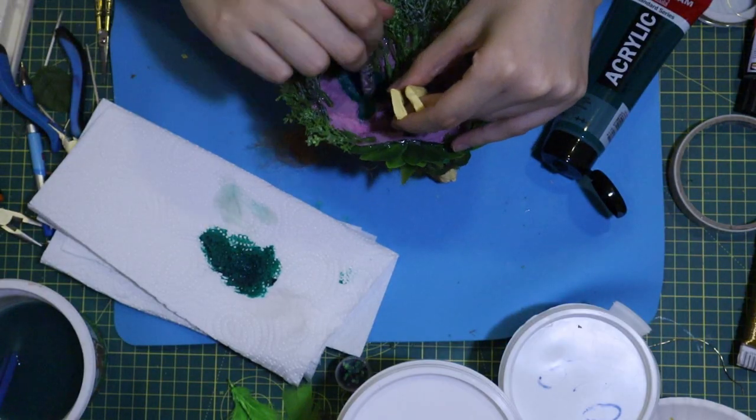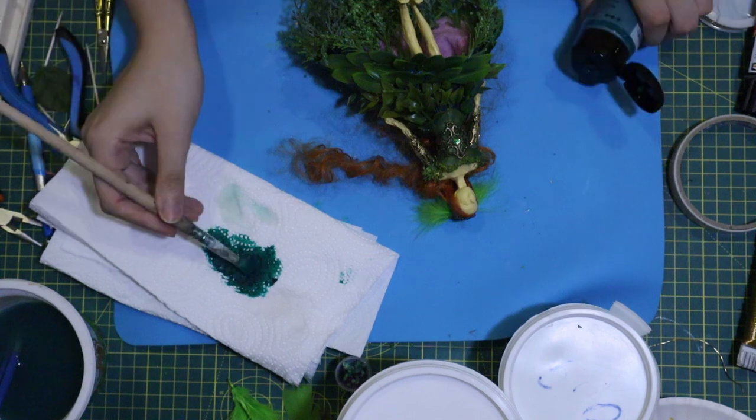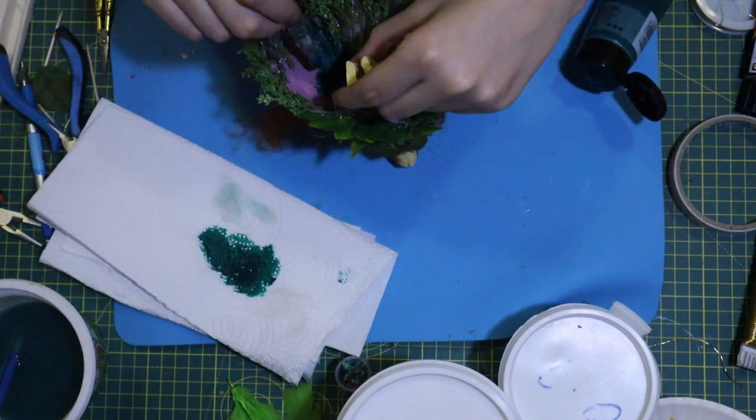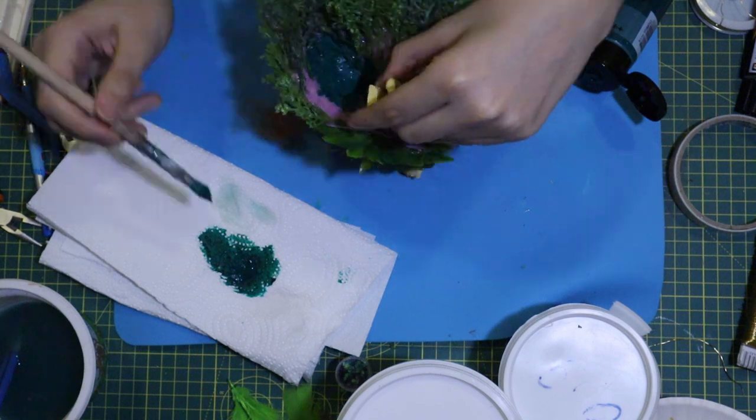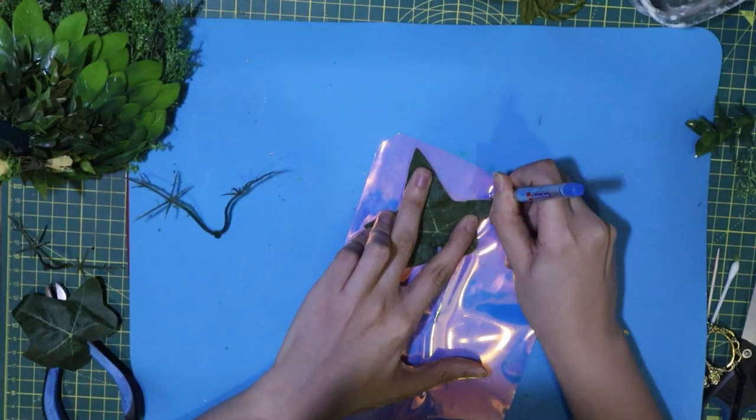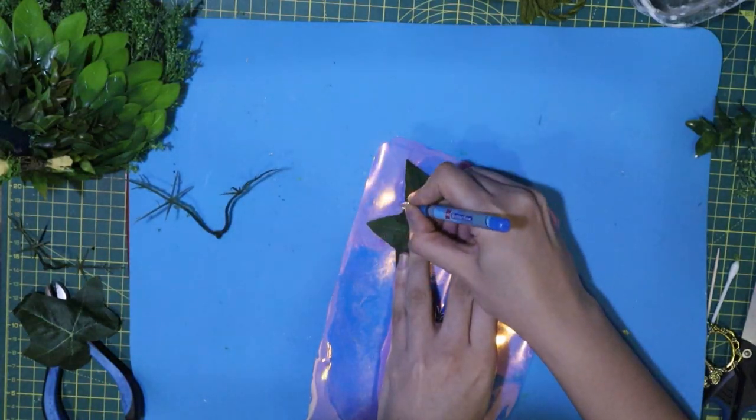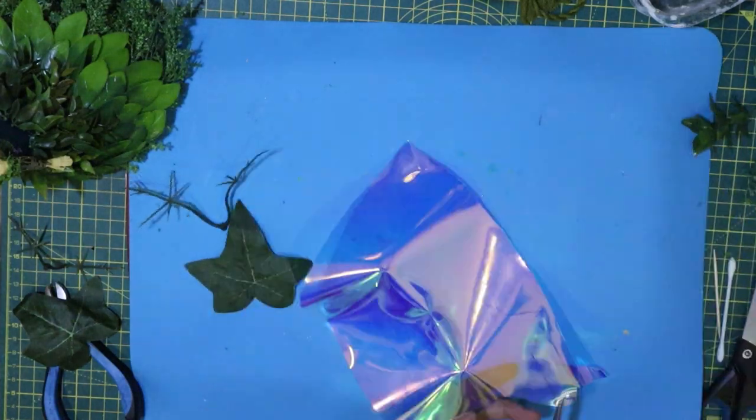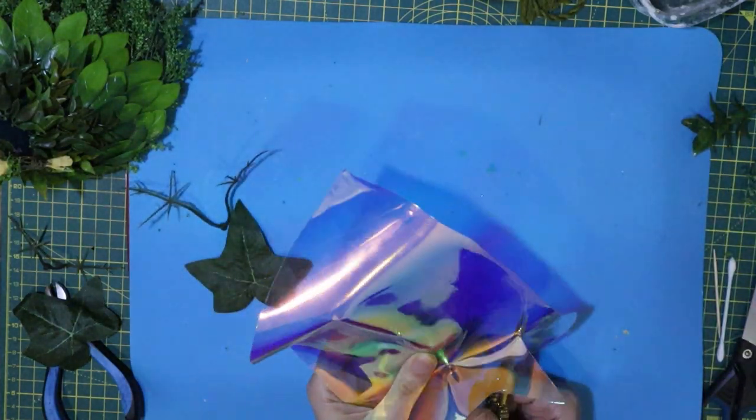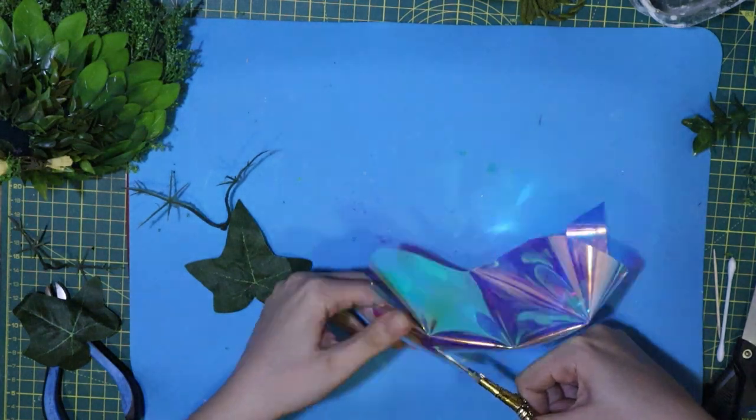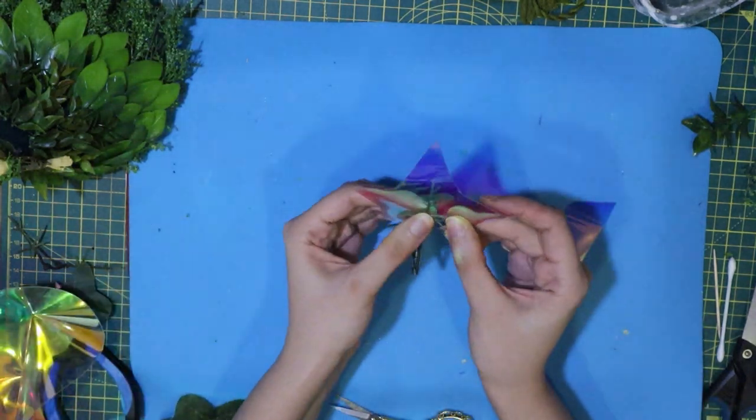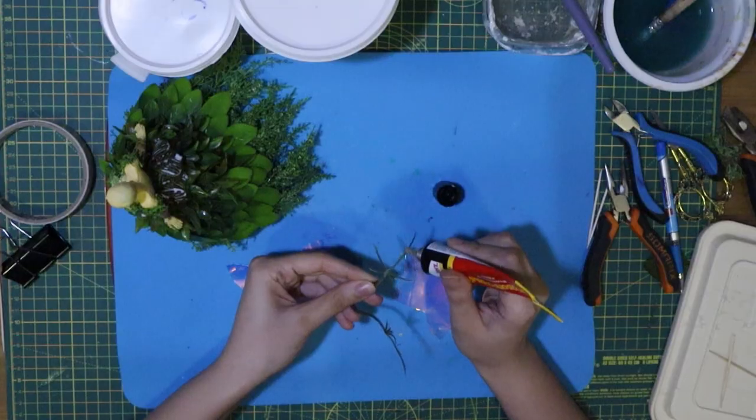I added more green in the inner side of her skirts because the pink was too visible. Our fairy needs wings and those wings are going to have a shape of a leaf. I cut pieces of holographic plastic in the shape of a leaf and attached them to the stems of artificial leaves.